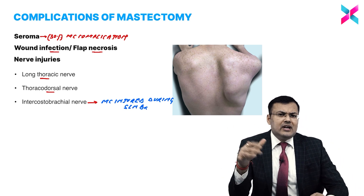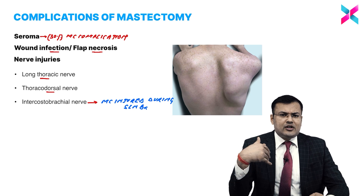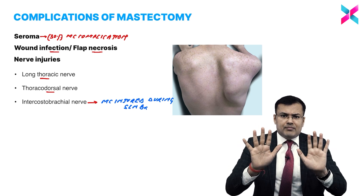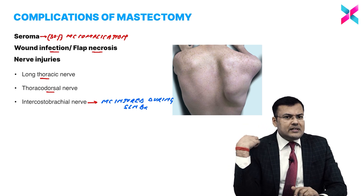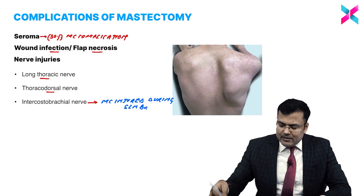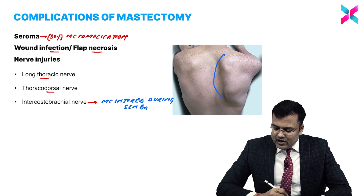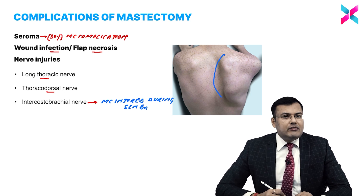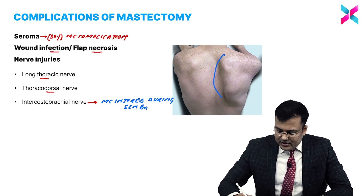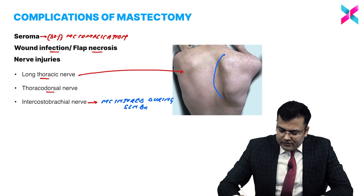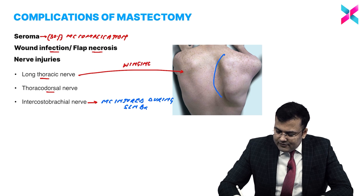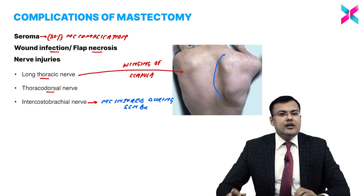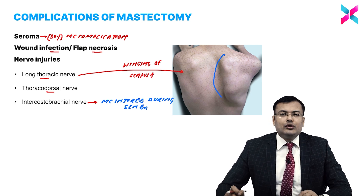One important question is asked in this fashion: after mastectomy, when a patient was pushing or punching the wall, what happens? There is winging of scapula, as you can see here. So which nerve is injured? Obviously, there is injury of the long thoracic nerve. Whenever there is winging of scapula, there is injury of the long thoracic nerve.